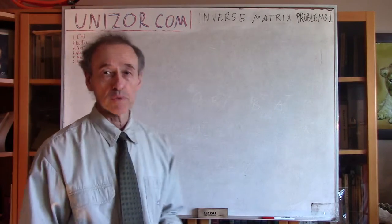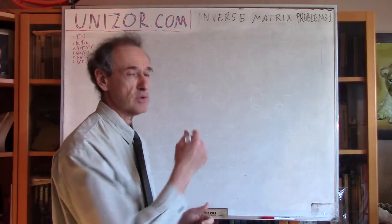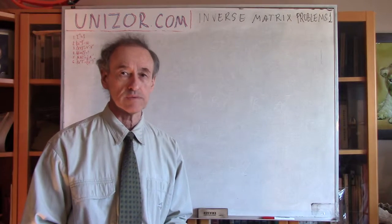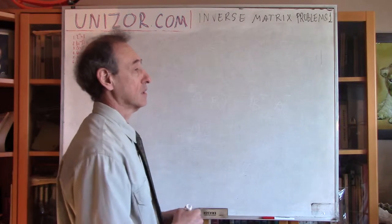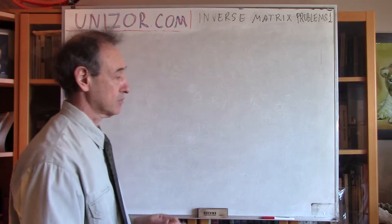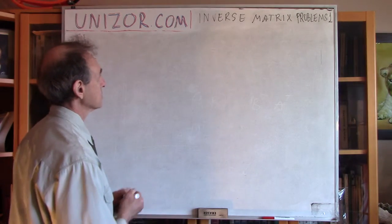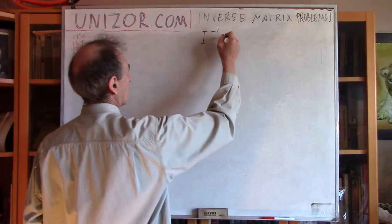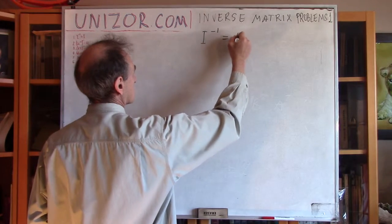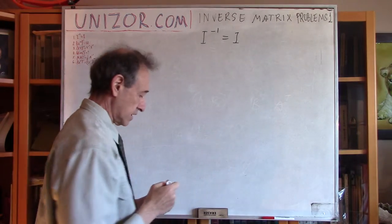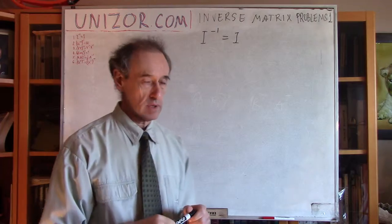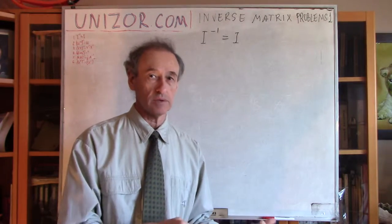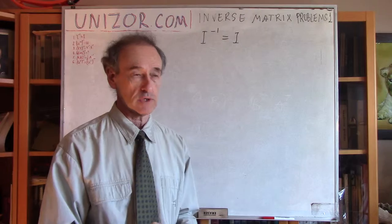Problem number one — actually most of them are like this, they are direct consequences from the definitions of inverse matrix and others. Problem number one: I have to prove that the inverse matrix of the identity matrix is itself, this same identity matrix.